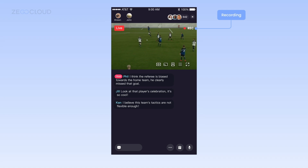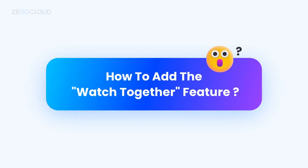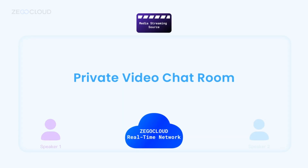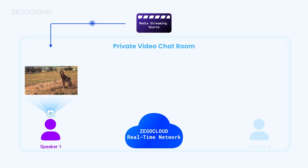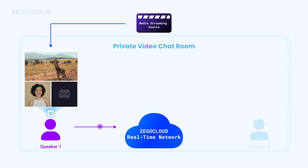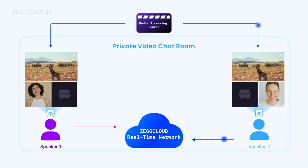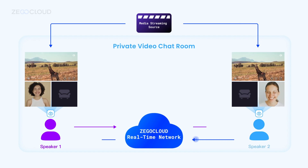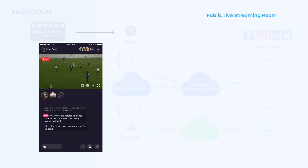How to add the Watch Together feature to your social application: In the private video chat room, Speaker One creates a room, subscribes to the media streaming source, and publishes the stream to the ZEGOCLOUD real-time network. When Speaker Two co-hosts, she also subscribes to the media and publishes her stream to the network. Then they play streams together to ensure audio and visual consistency.